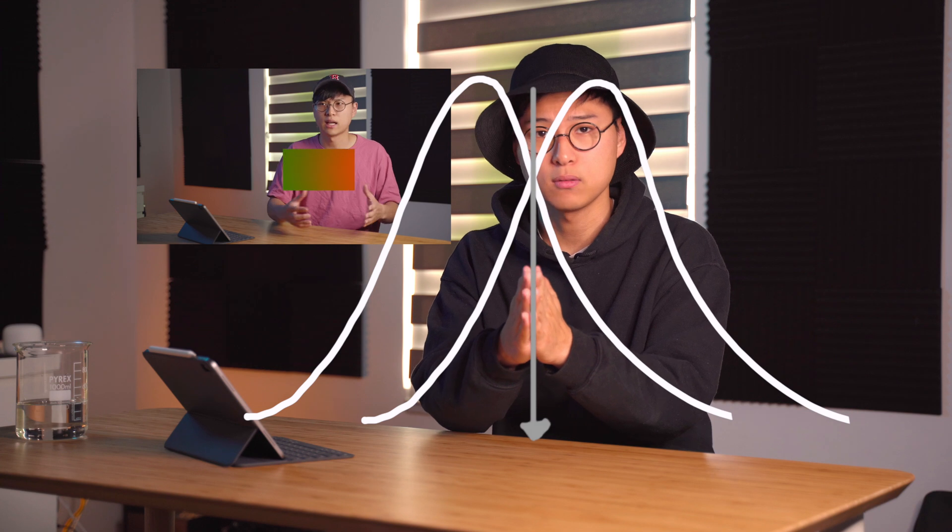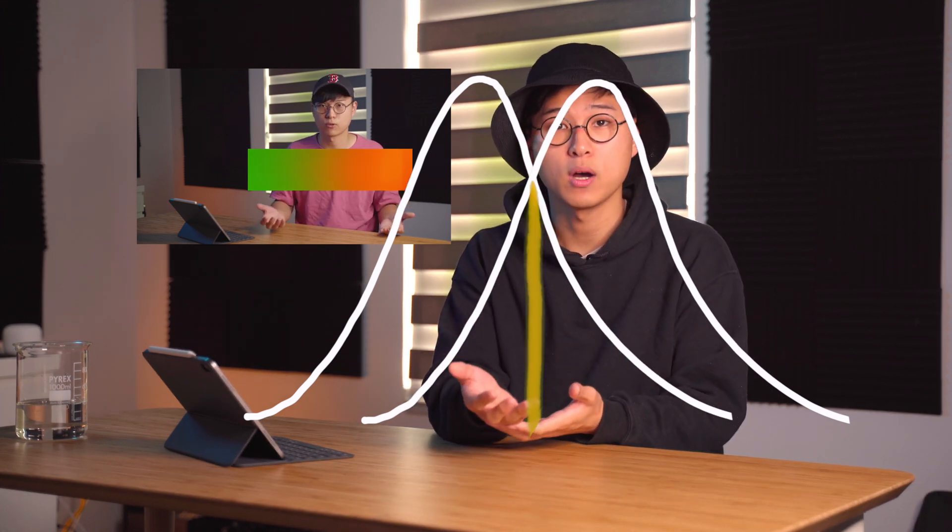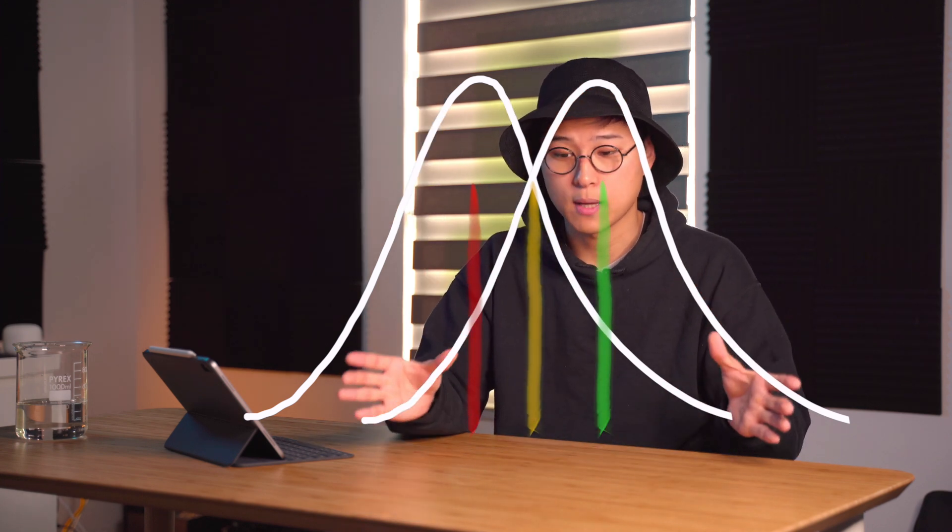But we still ran into another problem. If I presented a stimulus that is exactly in the middle, then we wouldn't know, let's say for example, whether it was a colour yellow or a combination of red and green. So in other words, the overlap between the two curves is good because it tells us more information about which colour is which. But too much overlap means that it's often difficult to determine whether we are seeing the actual wavelength itself or a combination of these two wavelengths.